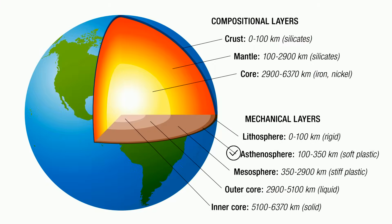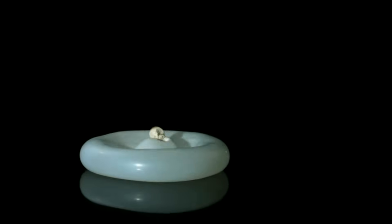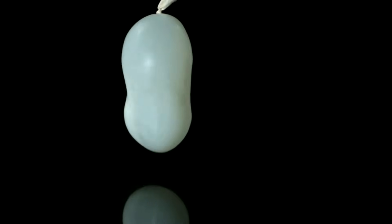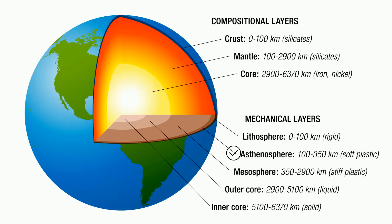The asthenosphere lies underneath and is made of solid rock that moves very slowly. It's described as viscoelastic, which means it can flow and also can be elastic. The asthenosphere is located below the lithosphere, and the tectonic plates move on top of the asthenosphere.